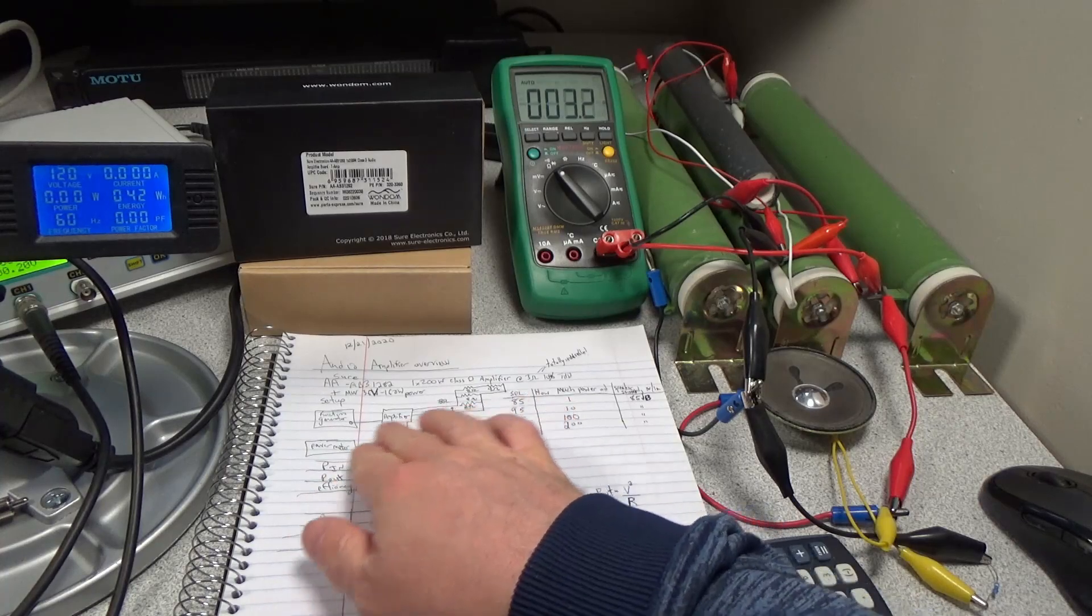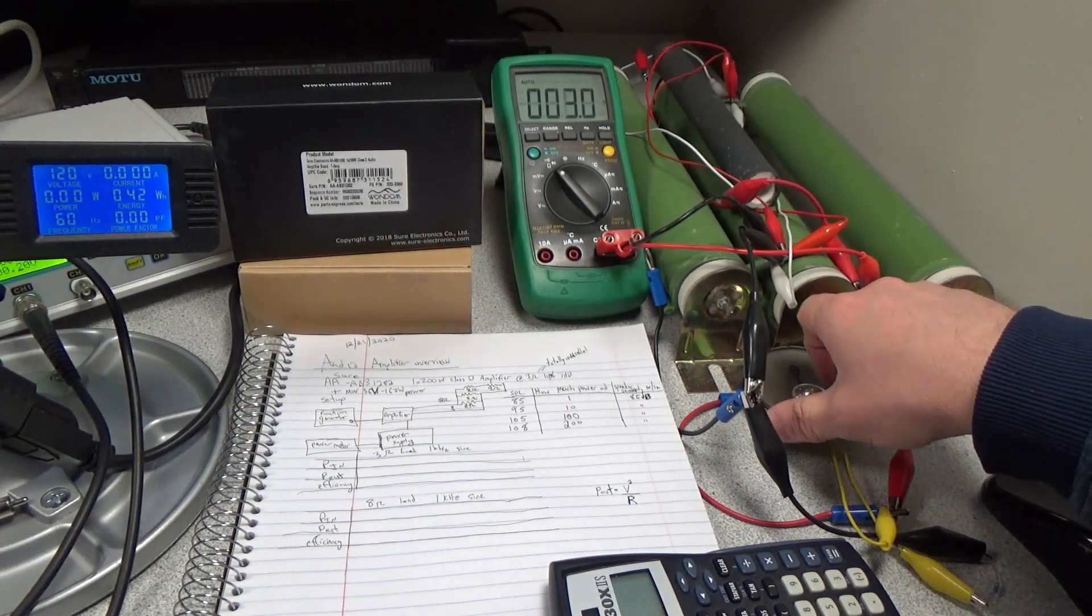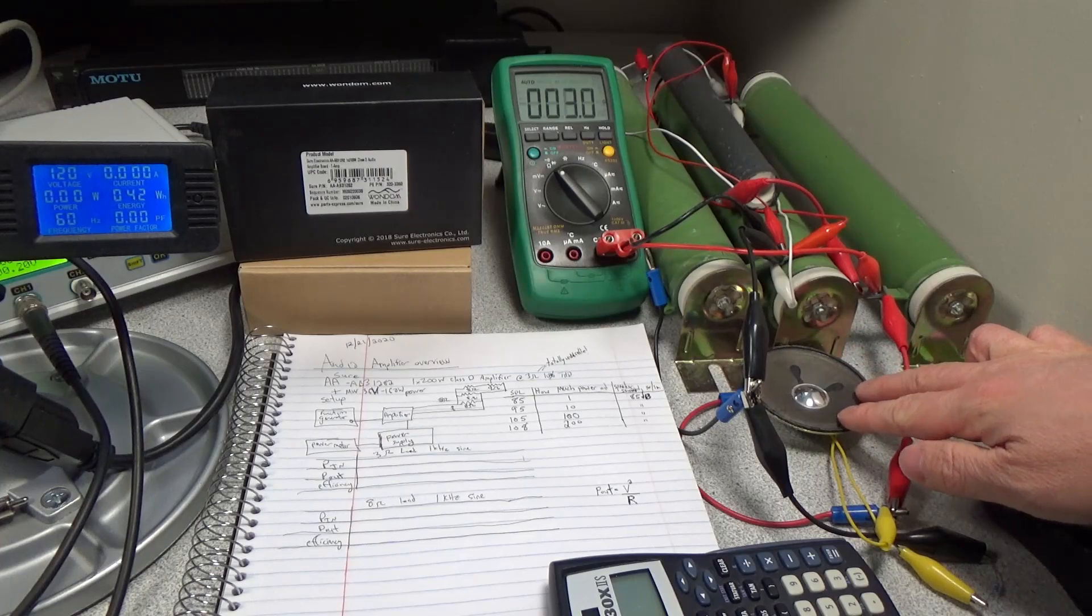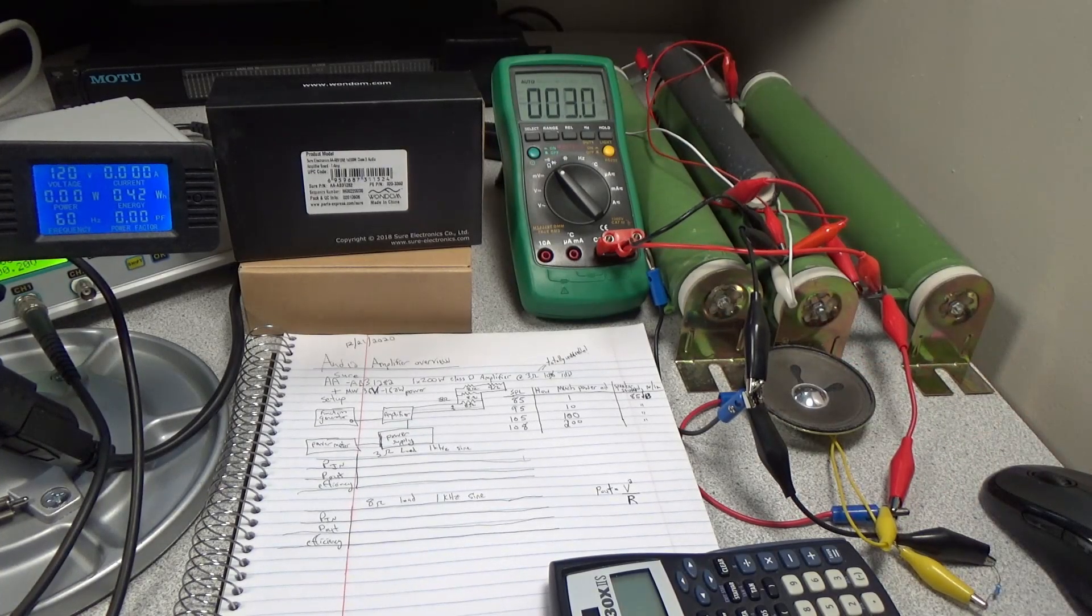I have the setup drawn out here. There's a function generator, the amplifier, power meter feeding a power supply, power goes into the amplifier, and from there we're feeding a bunch of resistors. I have a little speaker here so we can actually hear when the amplifier goes into clipping. That's set up through a 3.9K ohm resistor so we can hear how bad it's doing.